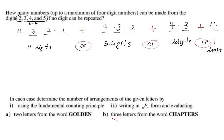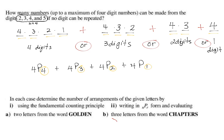Using permutation notation: 4P4 + 4P3 + 4P2 + 4P1. The second number represents the number of blanks available. That gives 24 + 24 + 12 + 4 = 64. That's quite a challenging question.